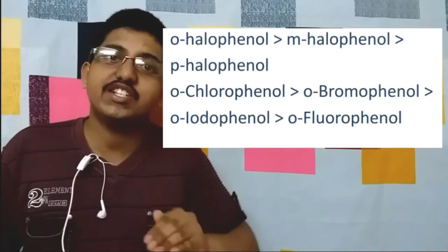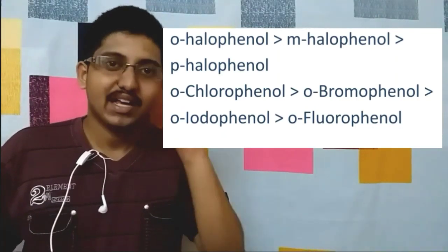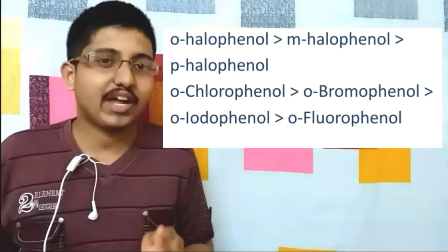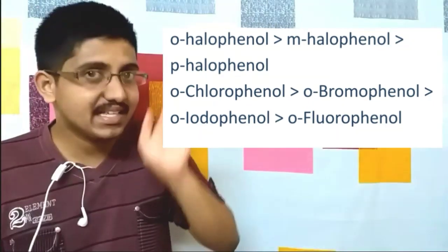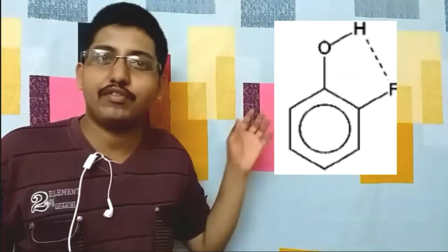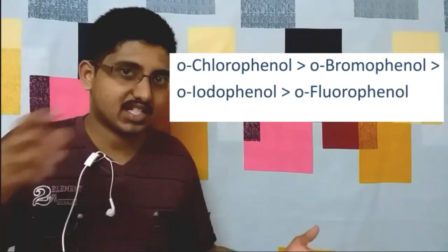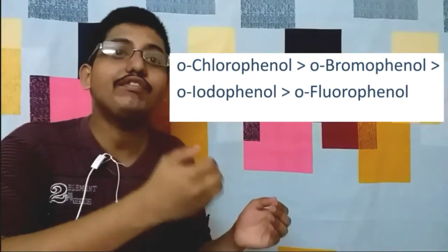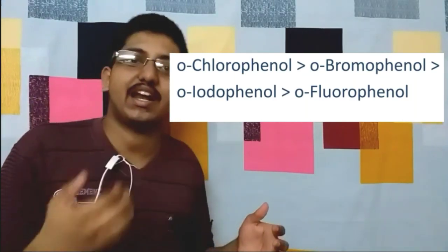Among orthohalophenols, orthofluorophenol is the least acidic due to strong intramolecular hydrogen bonding, making it difficult to remove the hydrogen. For the remaining orthohalophenols — chlorine, bromine, and iodine — the order follows electronegativity: more electronegative means stronger -I effect and more acidic character. So orthochlorophenol > orthobromophenol > orthoiodophenol.